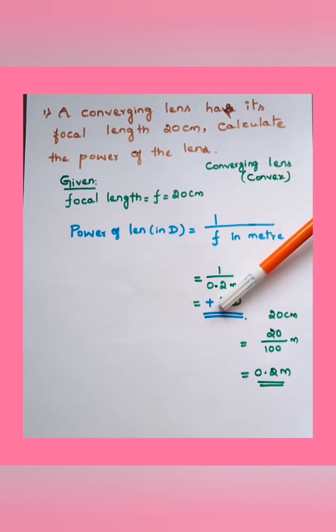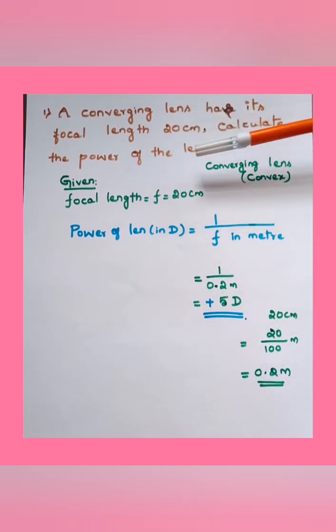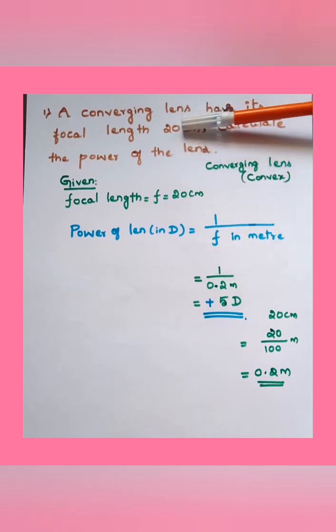That's all, very easy. In the multiple choice questions, you don't need to write 'given' - you can just directly calculate in the rough space. Just convert centimeter to meter, then 1 by the focal length, and put the sign if necessary.